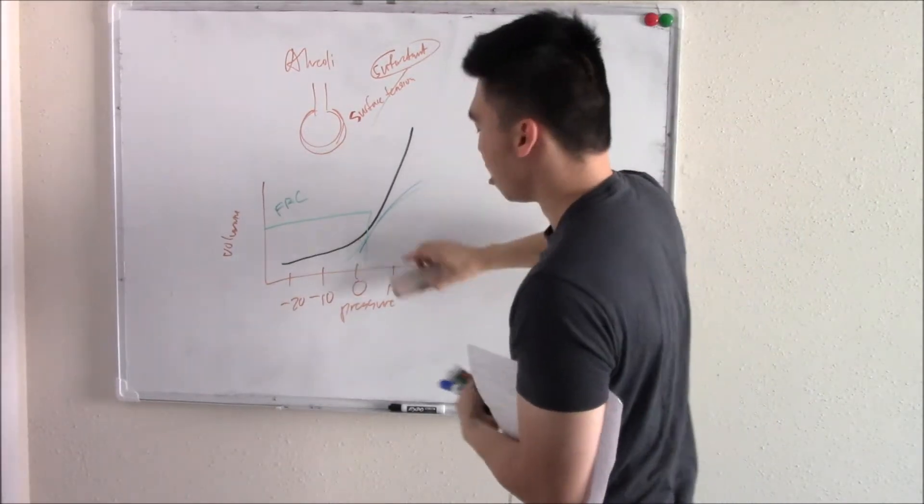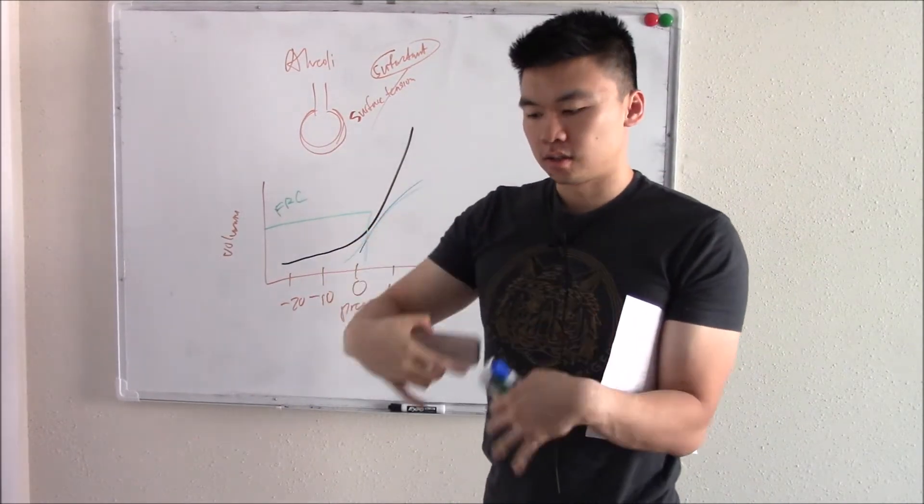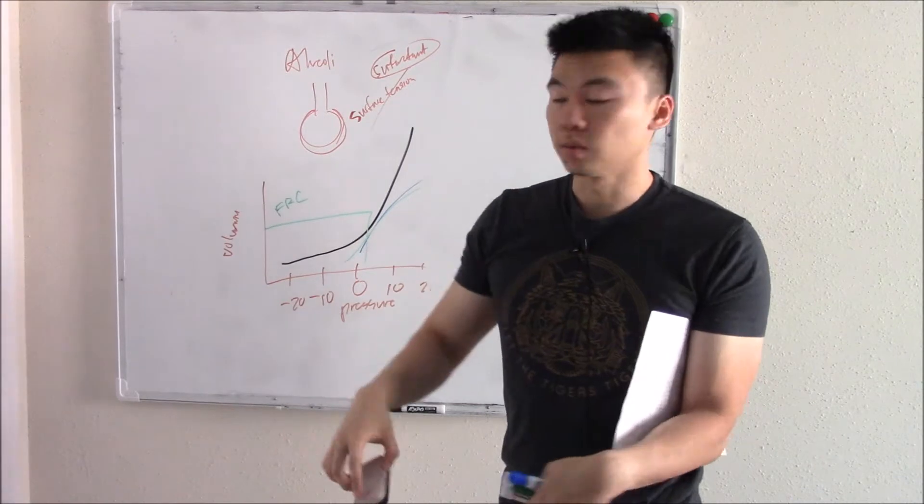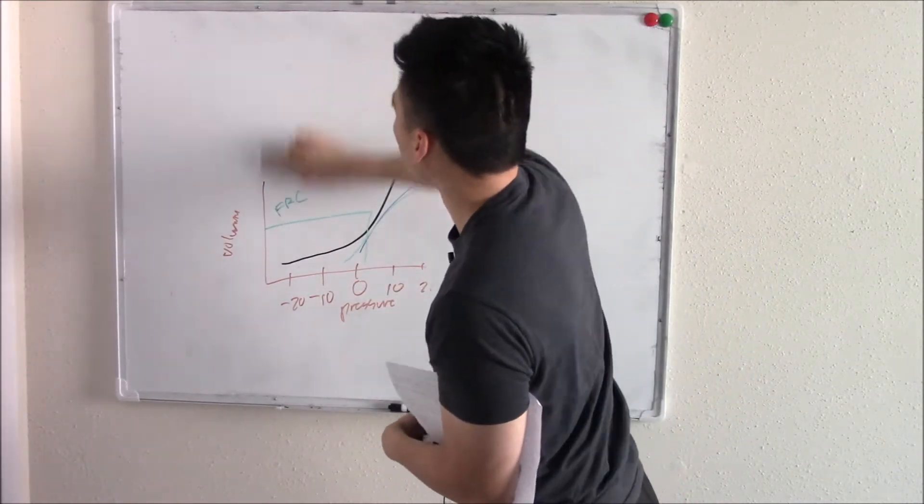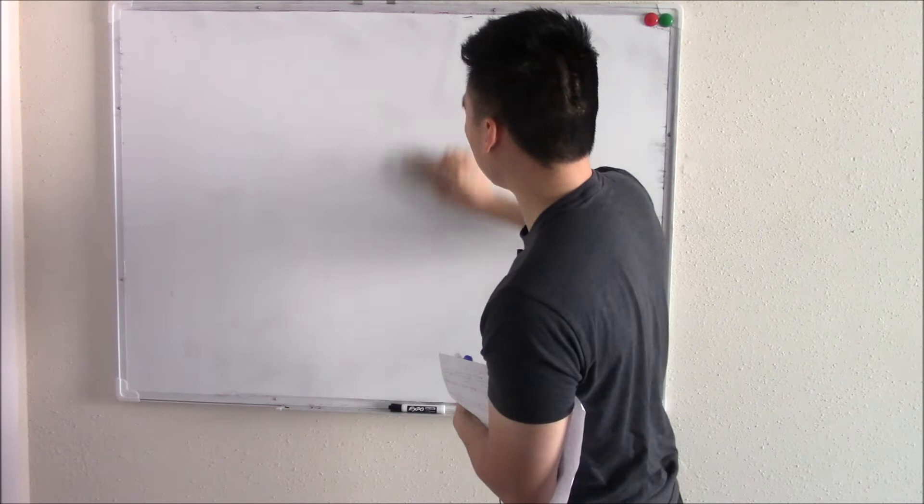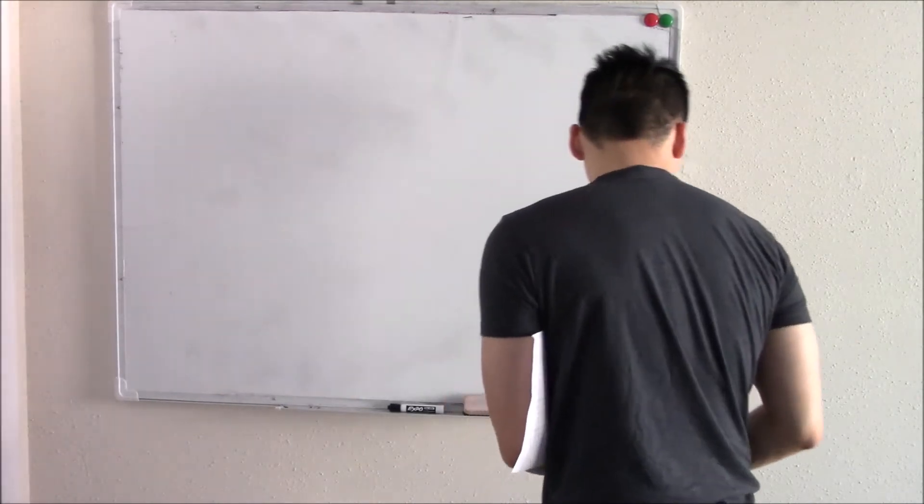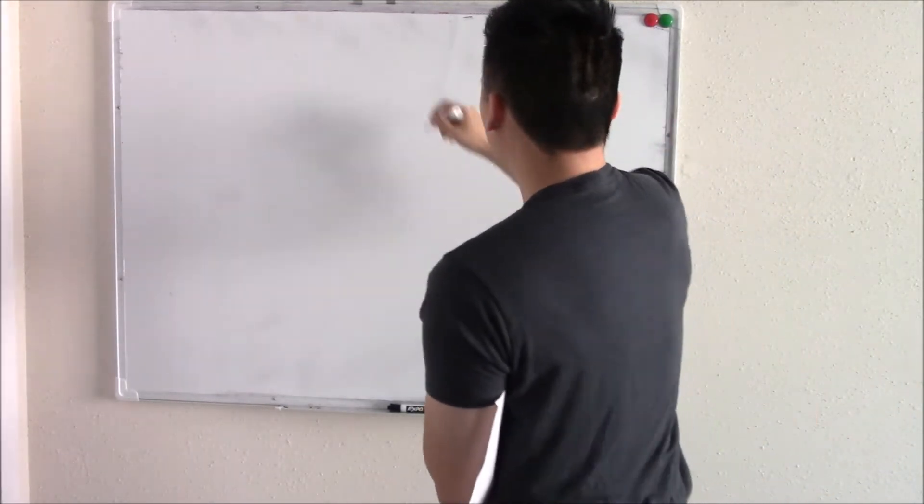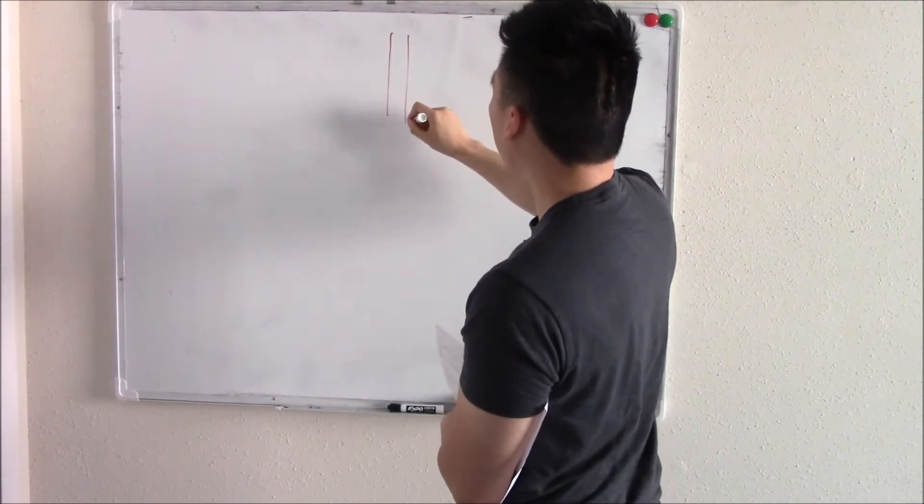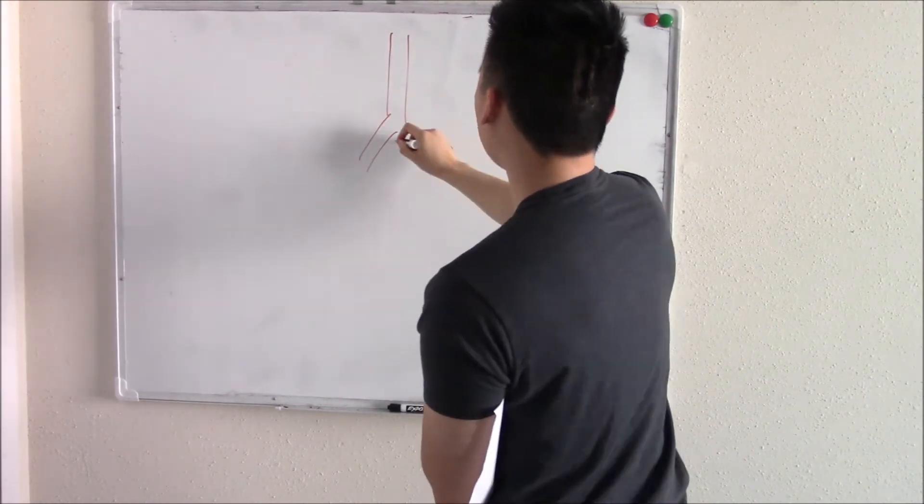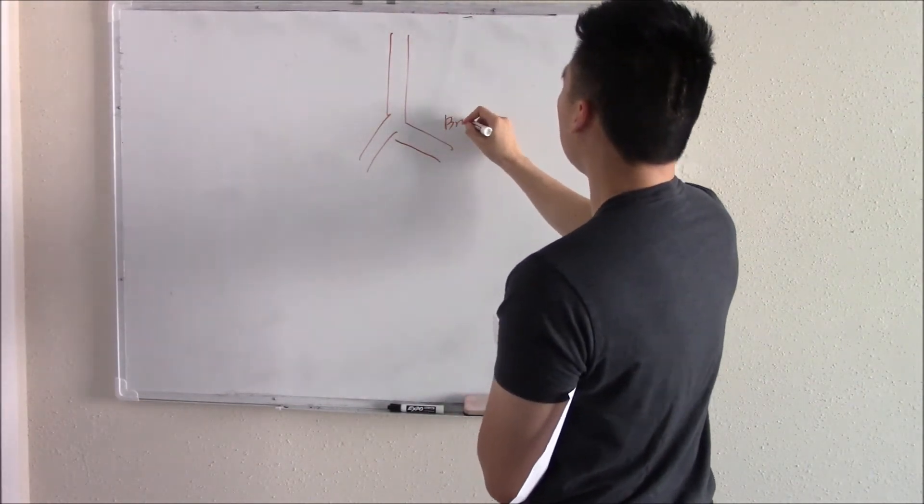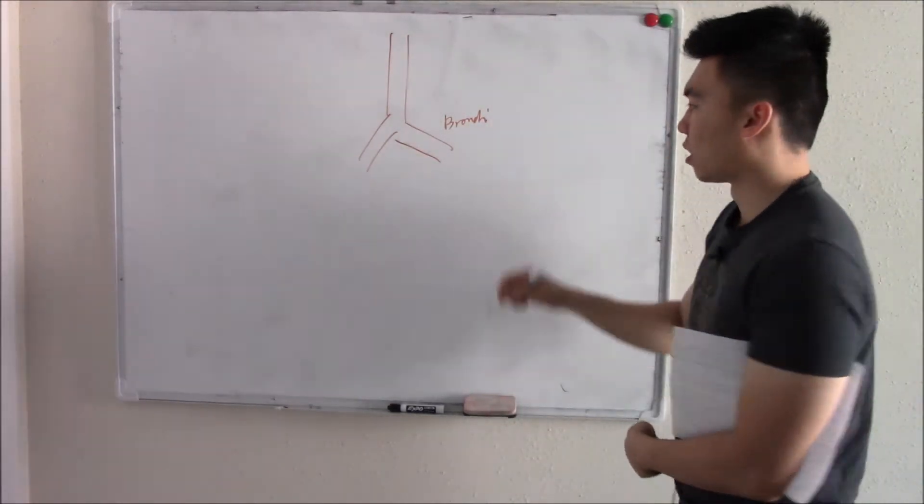We said when you breathe, air goes in, goes into your lungs, and that oxygen goes into your blood. How does it do that? Well, let's just draw out our lung anatomy. So you breathe into your trachea, your windpipe, and that branches into your bronchi, right? Your bronchi. And your bronchi branch into your secondary bronchi, tertiary bronchi.